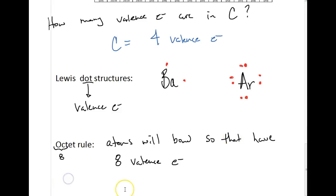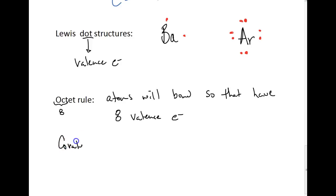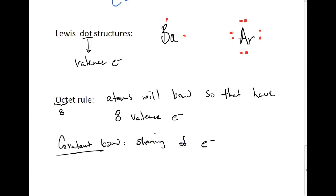In ionic compounds, we talked about how atoms will lose or gain electrons in order to get to 8 valence electrons, or an electron configuration like a noble gas. But with molecular compounds, we're talking about a different type of bonding with respect to the octet rule — covalent bonding. A covalent bond is the sharing of electrons, not the transfer of electrons to form an ion.